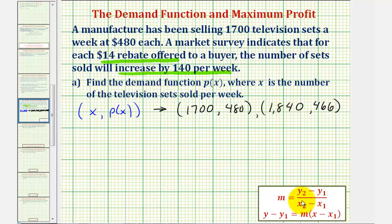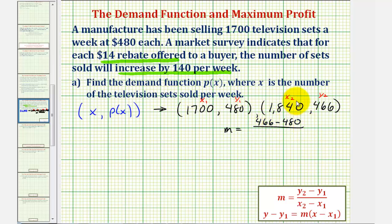Now from here we can find the slope. To keep things organized, let's call the first point X sub one, Y sub one, and the second point X sub two, Y sub two. The slope is equal to Y sub two minus Y sub one — the change in price — divided by X sub two minus X sub one — the change in quantity sold. So we have negative 14 divided by 140, which simplifies to negative one-tenth. So the slope is negative one-tenth.